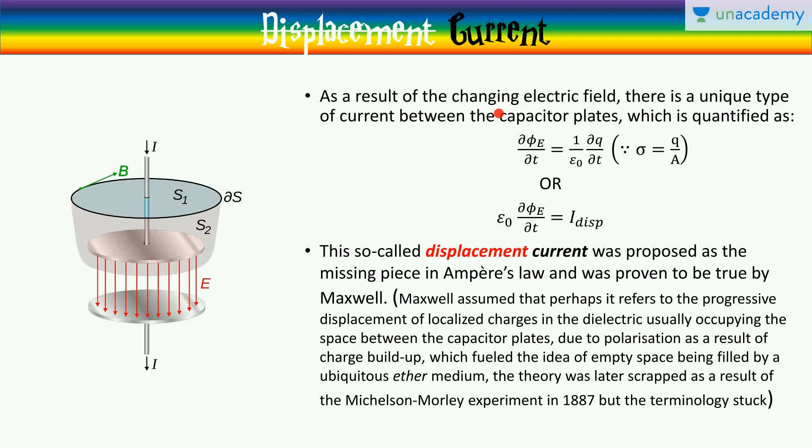As a result of the changing electric field, there is a unique type of current between the capacitor plates, which is quantified as the rate of change of electric flux, or given by 1 by epsilon naught dq/dt, where in the last slide, we saw that phi_E is sigma by epsilon naught into A, where sigma is q by A.